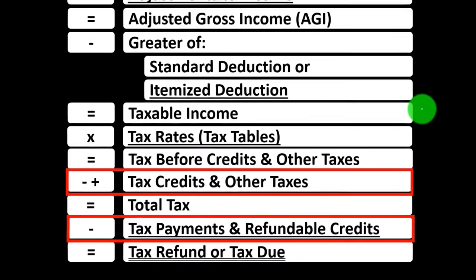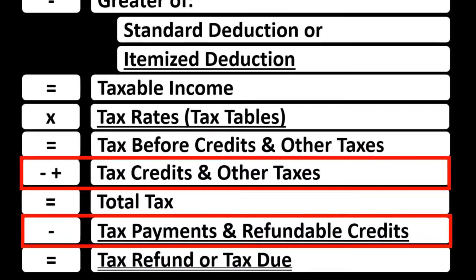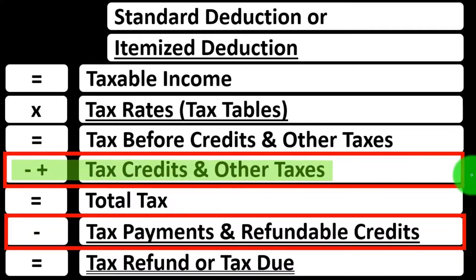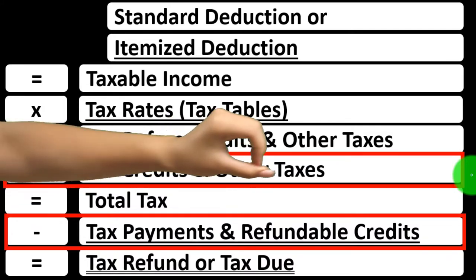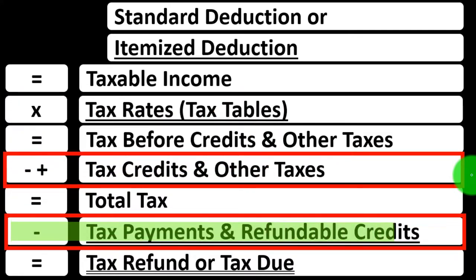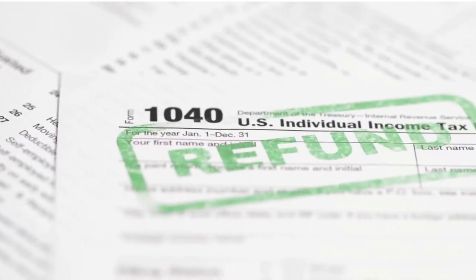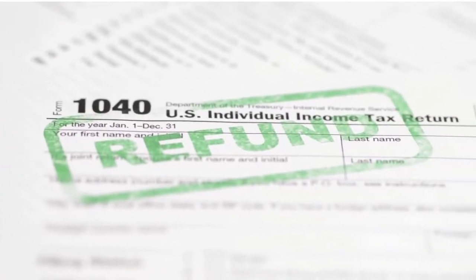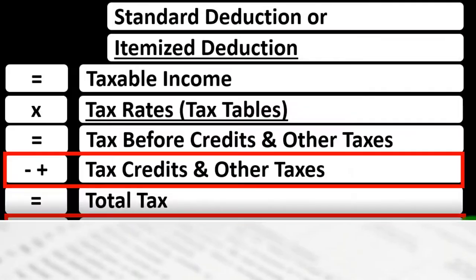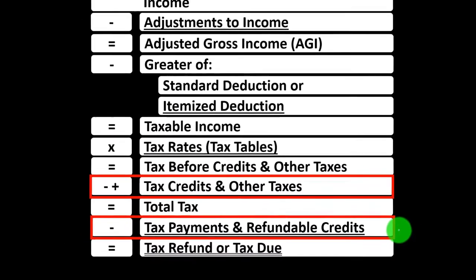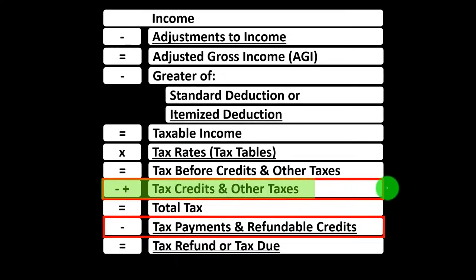We can think about credits in two general categories: those which are non-refundable and those which are refundable. Non-refundable credits don't take the tax liability below zero. Refundable credits may take the tax liability below zero, and if so, any receipt you'd get would really be more like a benefit program, even though it's still called a refund. Some credits might have both a non-refundable and a refundable portion.